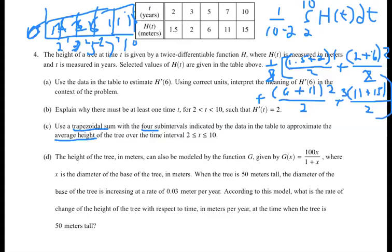You do not have to go any further than that. That's the answer. If you want to simplify that, it comes out to be 263 divided by 32. This would be the average height of the tree in meters over that eight year time. So that would be the answer to C.